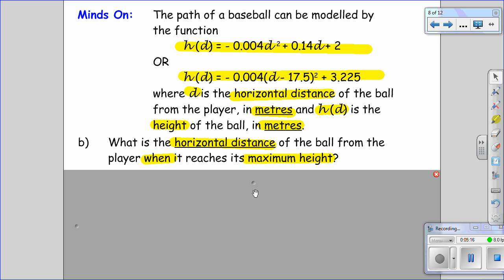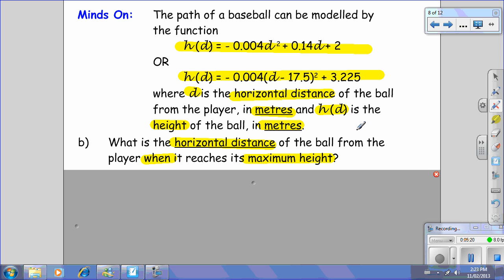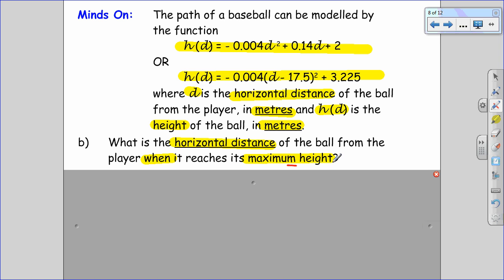Part B, what's the horizontal distance of the ball when it reaches its maximum height? So again, the maximum height is important, right? That tells me I'm looking for the distance when it reaches its maximum, which tells me to use this equation here, my vertex form equation. But I'm not looking for this maximum anymore. I'm looking for the distance from the player.